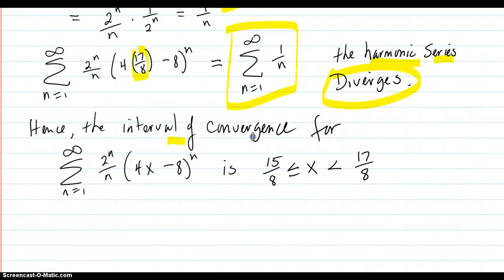Hence the interval of convergence for the original series is 15/8 less than or equal to x less than 17/8. You get the 15/8. You don't get the 17/8. You get any number in between there.